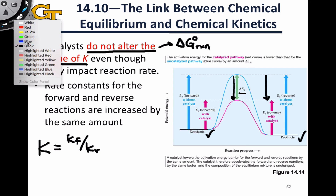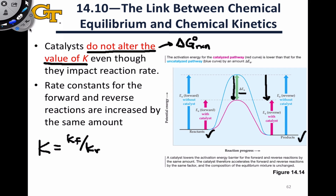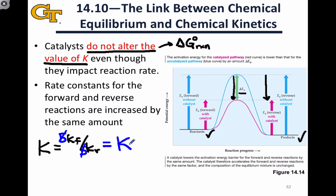We can show this for a fairly simple hypothetical example. Say we use a catalyst that increases the speed of the forward reaction five times — it's going to have the same effect on the rate constant for the reverse reaction, such that the two factors of five, the two speeding factors, will cancel one another. In the catalyzed condition, we'll still have the equilibrium constant equal to the same value. Bottom line: a catalyst cannot alter the value of K, and it can't make a reaction that's thermodynamically unfavorable go. Kinetics and thermodynamics are two separate issues.